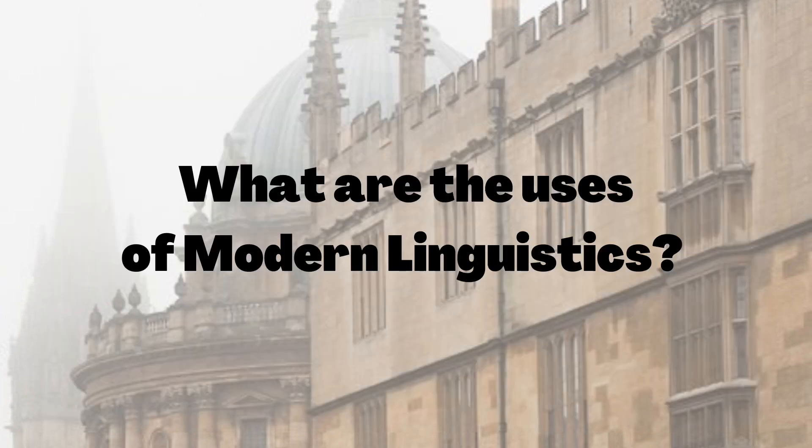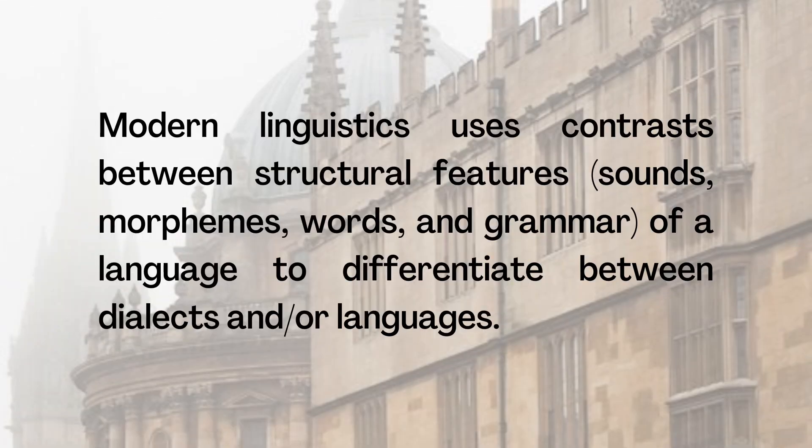What are the uses of modern linguistics? Modern linguistics uses contrast between structural features — sounds, morphemes, words, and grammar of a language — to differentiate between dialects or languages. The principle here, as in hard sciences, is to identify the features of language that can be used to contrast one language or dialect from another.